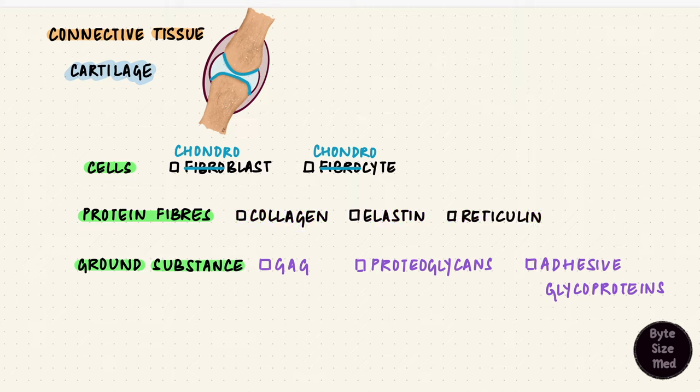The fibers are predominantly type 2 collagen, and some places have type 1 collagen and elastin. This depends on what type of cartilage we're talking about and what part of the cartilage we're talking about, but I'll get to that.